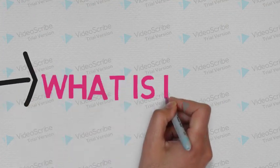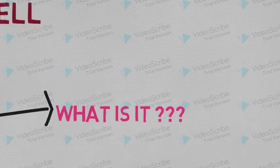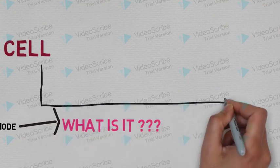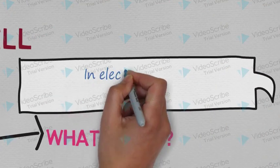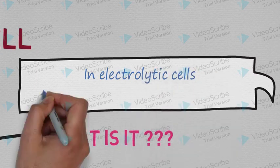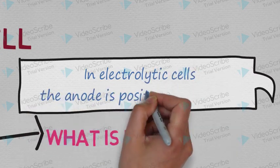And vice versa for the anode. In Electrolytic cell, the anode is positively charged electrode.